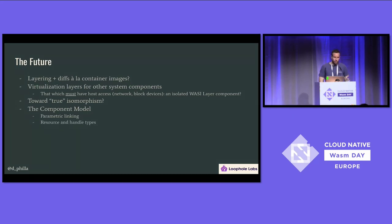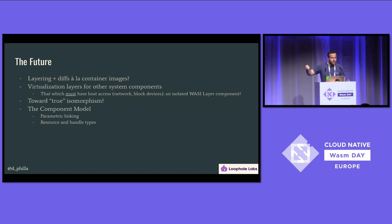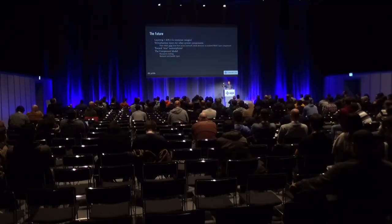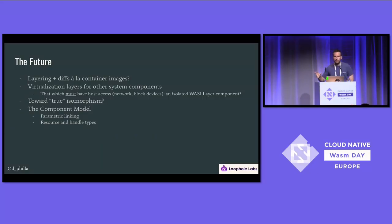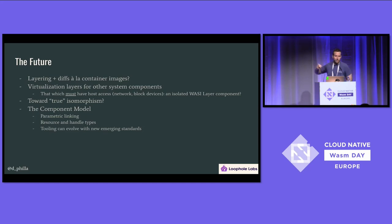Could this lead towards a sort of true isomorphism? People who remember the early days of Node.js thinking about isomorphic JavaScript — this could blur the lines between the server and the client, with WebAssembly running with virtual file system layers in many places, not just server and client, but IoT devices and many other situations. With the component model, parametric linking will make this much easier, and resource and handle types will be a huge boon. The VFS layer sidesteps the context switching from user space to kernel space, so this could actually make things faster than native for some file system operations — a theoretical possibility, but very interesting. The tooling can evolve with new and emerging standards, and as soon as different runtimes have support for the component model, we can swap these things out and make things even better.